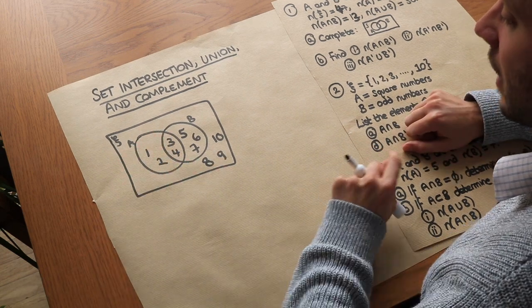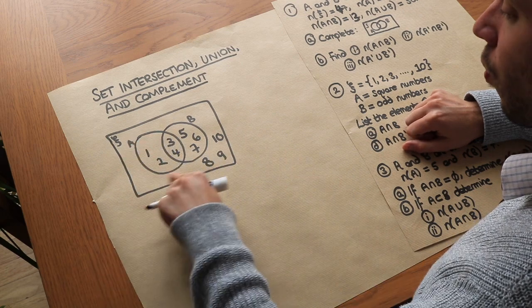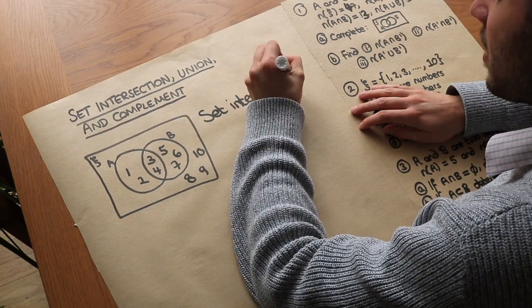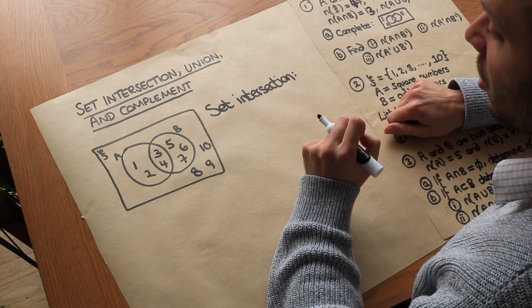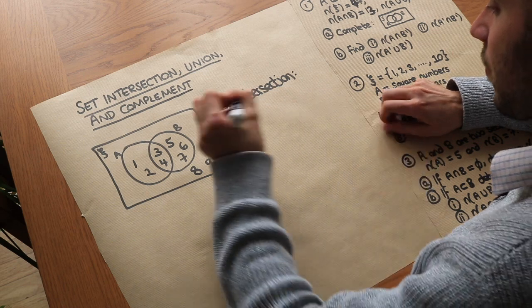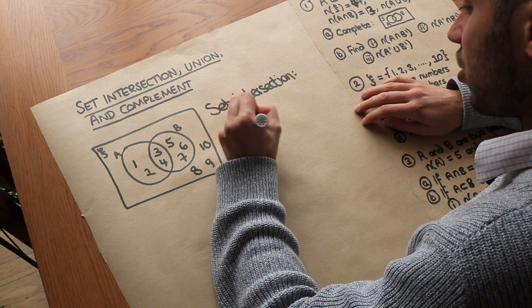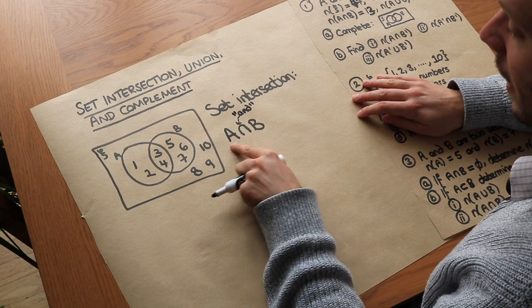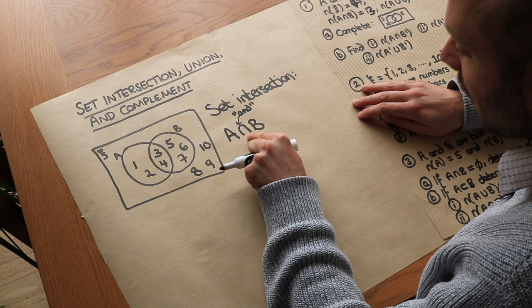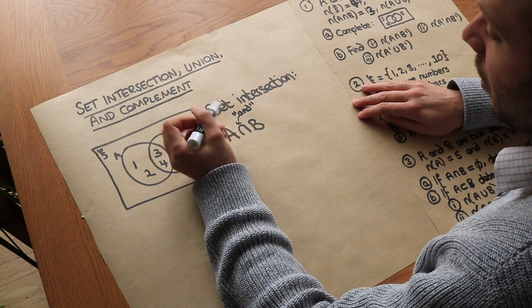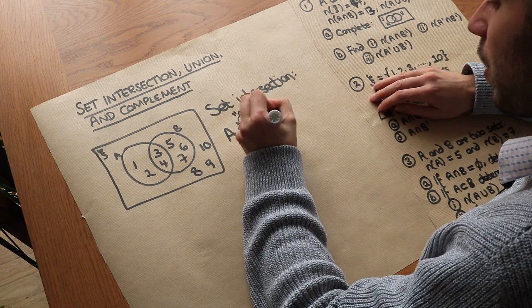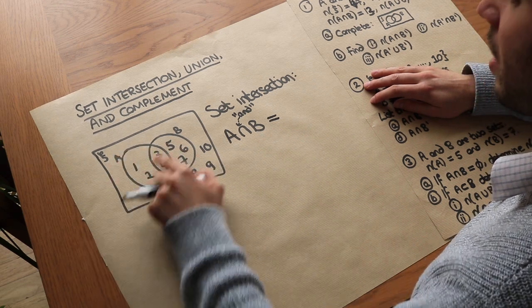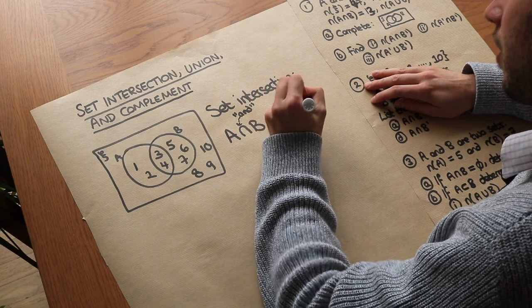So how could we refer to a particular region of the Venn diagram? The first thing is set intersection. The intersection of two sets are the values which are in both the first set and the second set. We write it as A ∩ B, and you could read that symbol as AND. So this means the set of things which are in A and in B. The symbol itself is called a cap symbol. So we want all the values in A and in B — that's the three and the four, giving us the set {3, 4}.